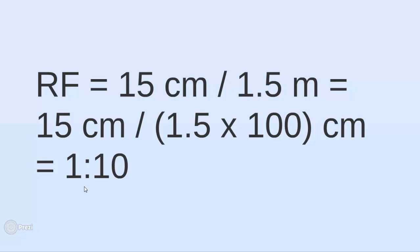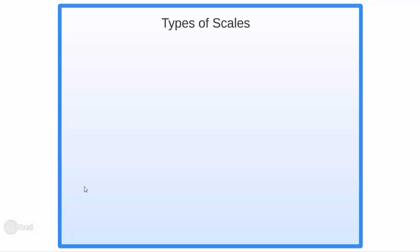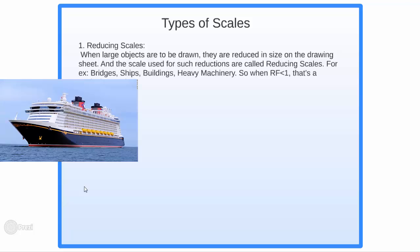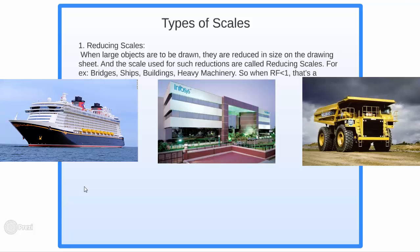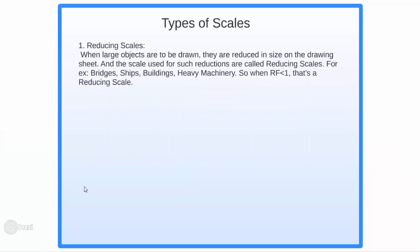Now that you've understood the idea behind having a scale, we'll now go ahead and classify them on the basis of RF, that is representative factor. So the first scale that we're going to talk about is a reducing scale and it's used for preparing drawings of huge objects like ships, buildings and heavy machinery. Here the length on drawing is less than the actual length. So RF is going to be less than 1 always.